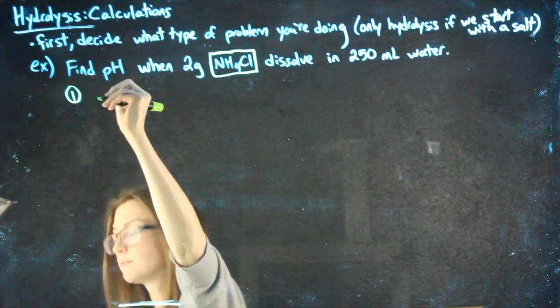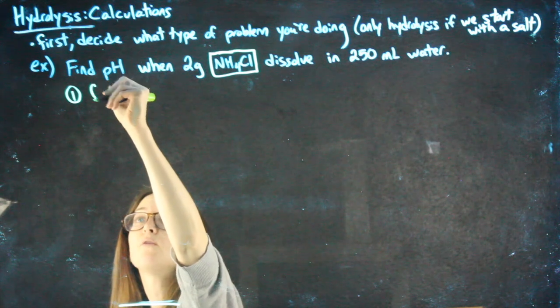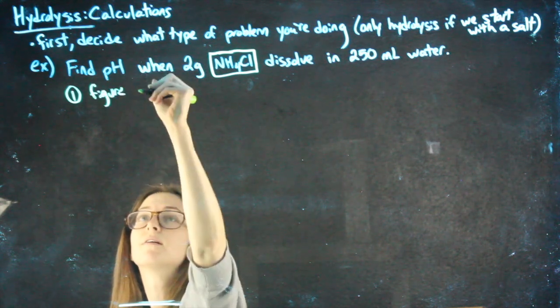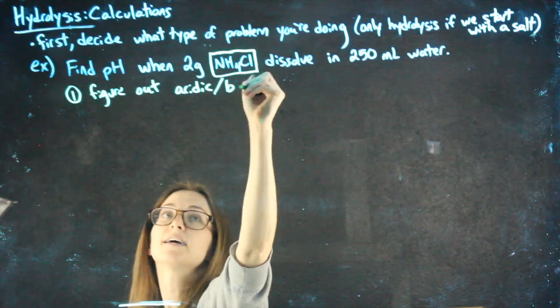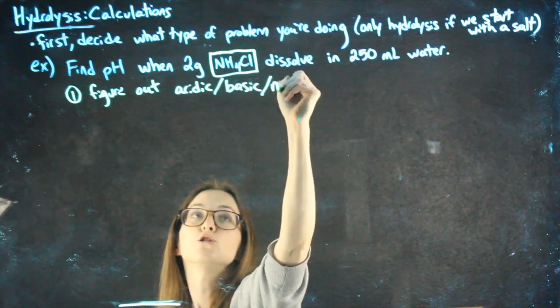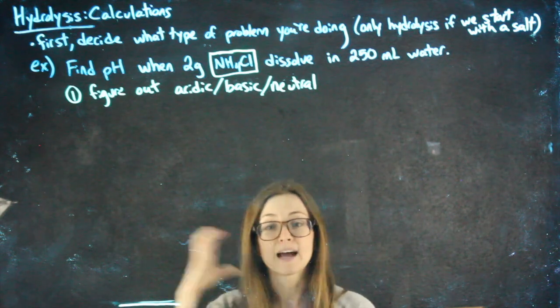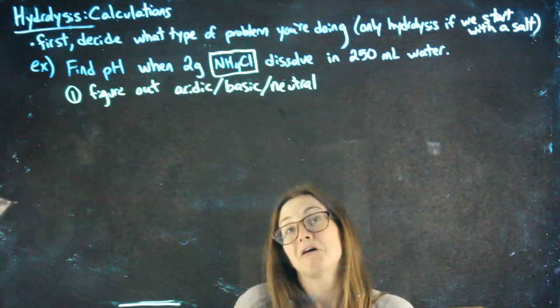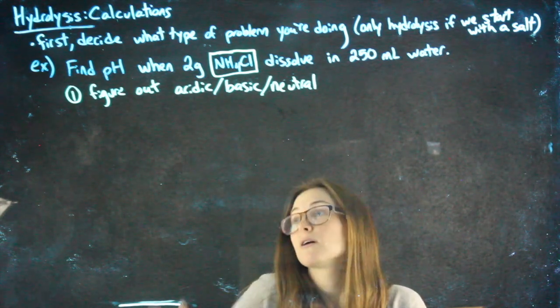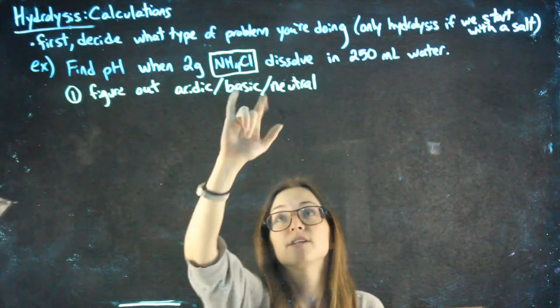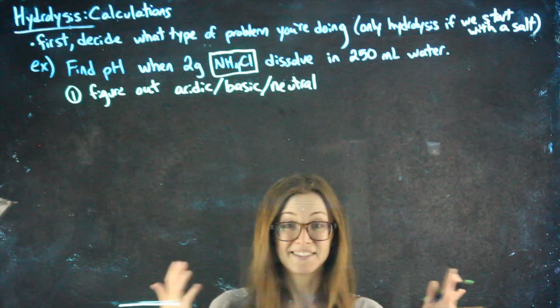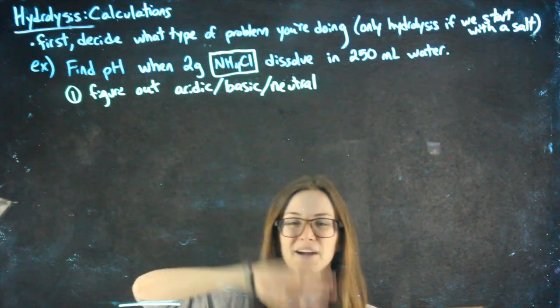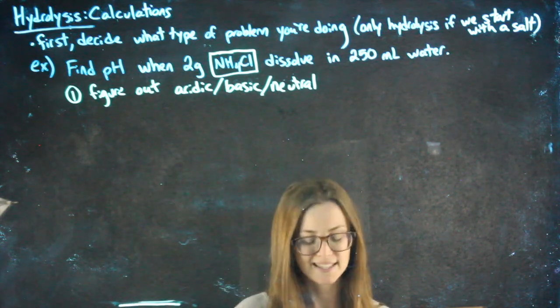The first step is to figure out if it's acidic, basic, or neutral, like we did in that last set of try problems. Honestly, it's probably never going to be neutral, because if I ask you to find the pH of something neutral, you should just know the answer is seven, and that's the end of it, and I probably am not going to give you a trick like that, so it's probably acidic or basic.